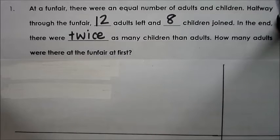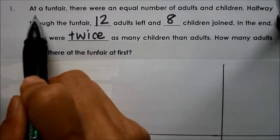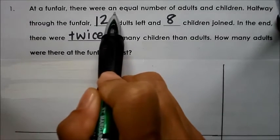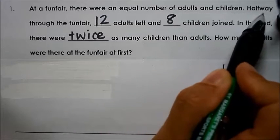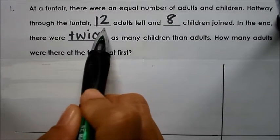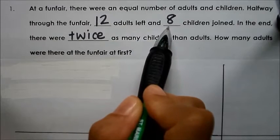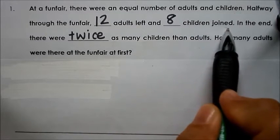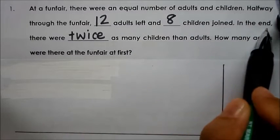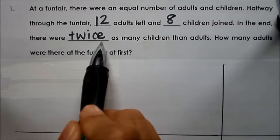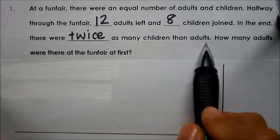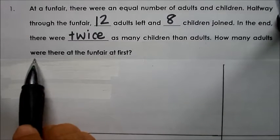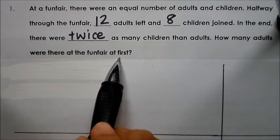Let's read the question. At a fun fair, there were an equal number of adults and children. Halfway through the fun fair, 12 adults left and 8 children joined. In the end, there were twice as many children than adults. How many adults were there at the fun fair at first?